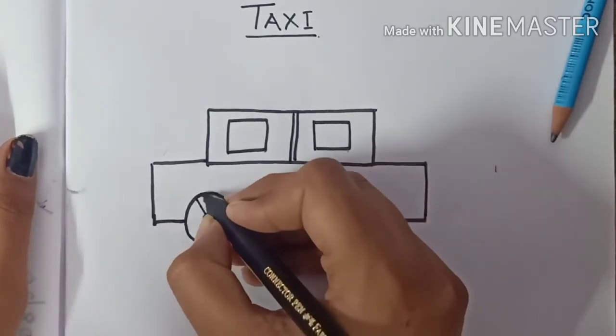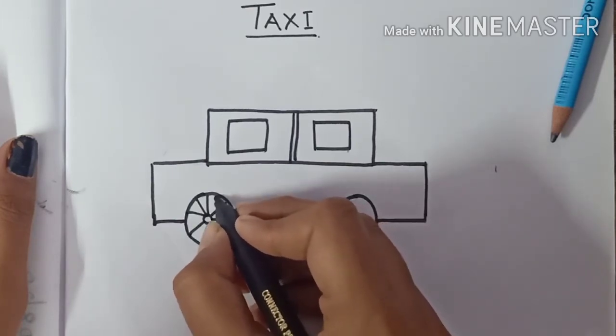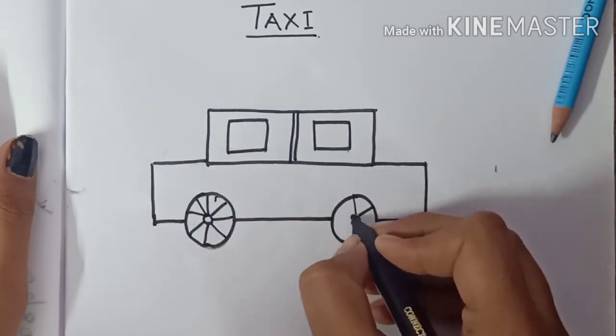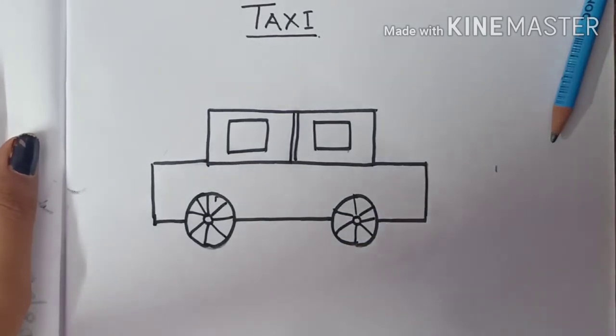After that, make some spokes. This is again not compulsory because this is a very basic drawing for kids.